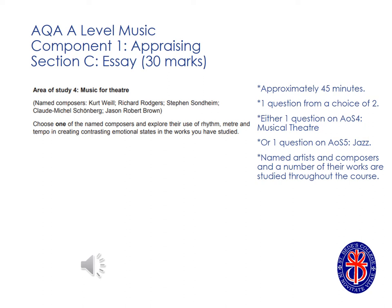In Area of Study 4, Music for Theatre, students study the works of three out of five named composers, who are Kurt Weill, Richard Rodgers, Stephen Sondheim, Claude-Michel Schönberg and Jason Robert Brown. At St Bede's, we study the works of Rodgers, Sondheim and Schönberg. For the Musical Theatre question, students will almost always be asked to discuss how two of the named composers use the musical elements to reflect aspects of the drama. Here we can see an example of an exam question from section C, where you are asked to discuss how the elements of rhythm, meter and tempo are used to create contrasting emotional states.